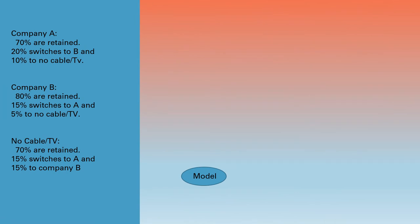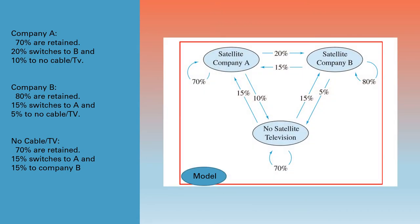Since these results are there, company A, company B, no cable TV, let us prepare a model. The diagram easily shows us that in company A, 70% are retained, 20% switches to B, and 10% switches to no cable TV.